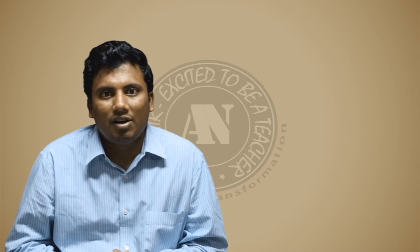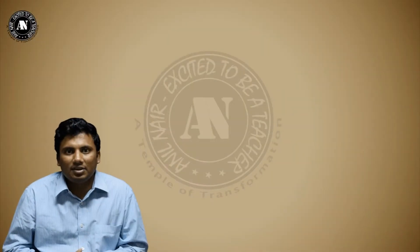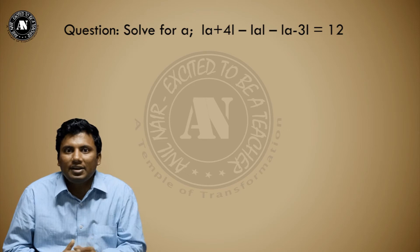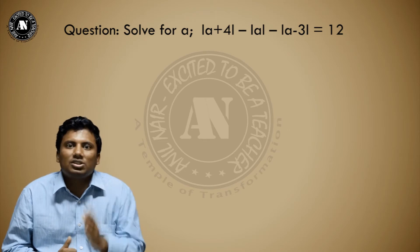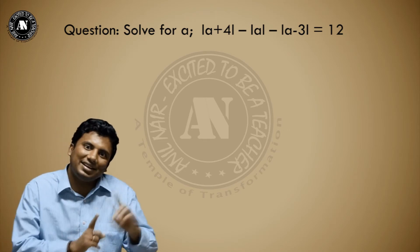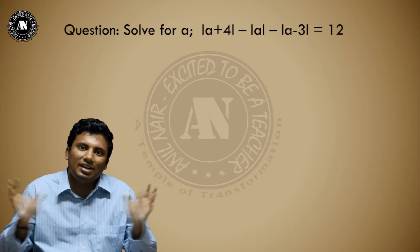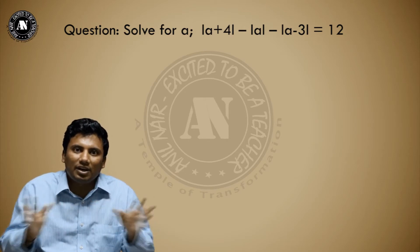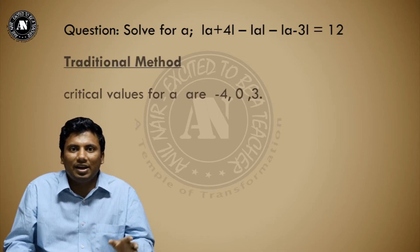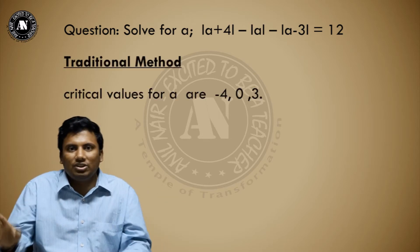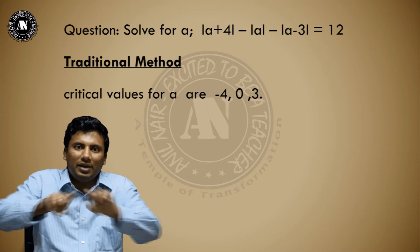Let us explore by taking an example question: solve for a — mod of (a + 4) minus mod of a minus mod of (a − 3) equals 2L. First let us see the traditional method. In the traditional method, first we will find out the critical values for a. The critical values are minus 4, 0, and 3.